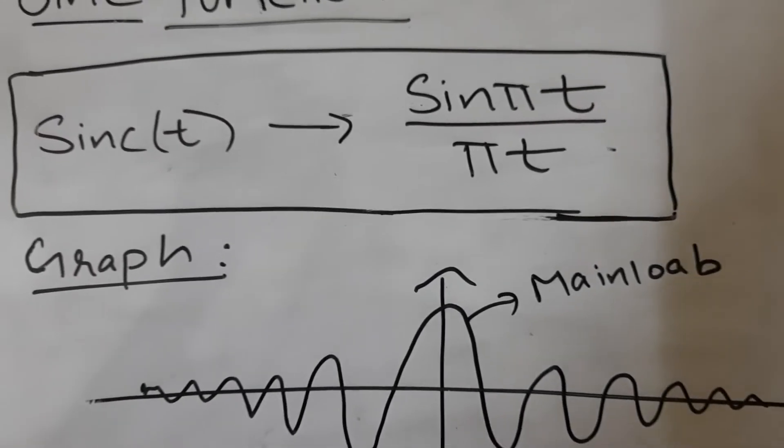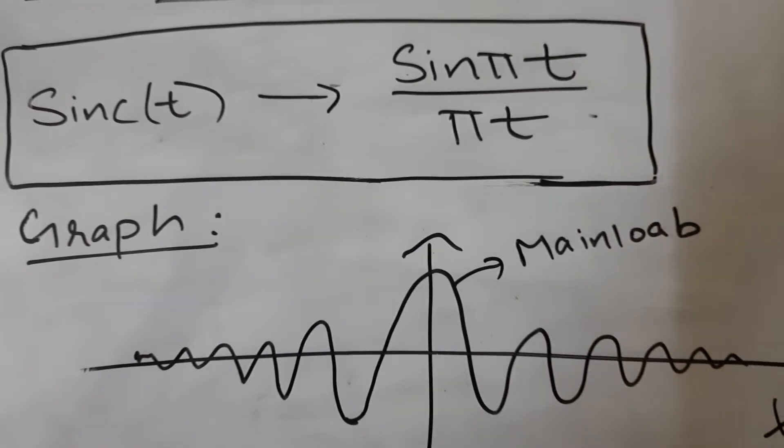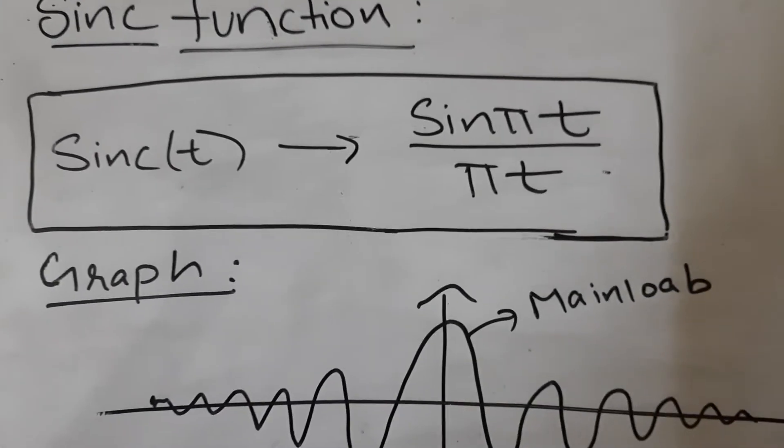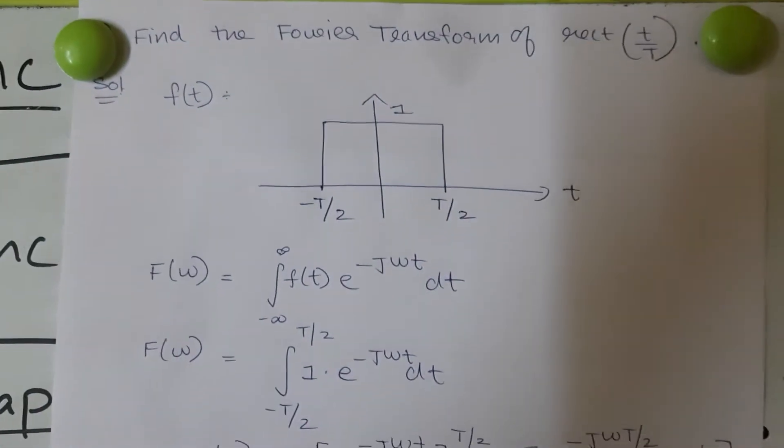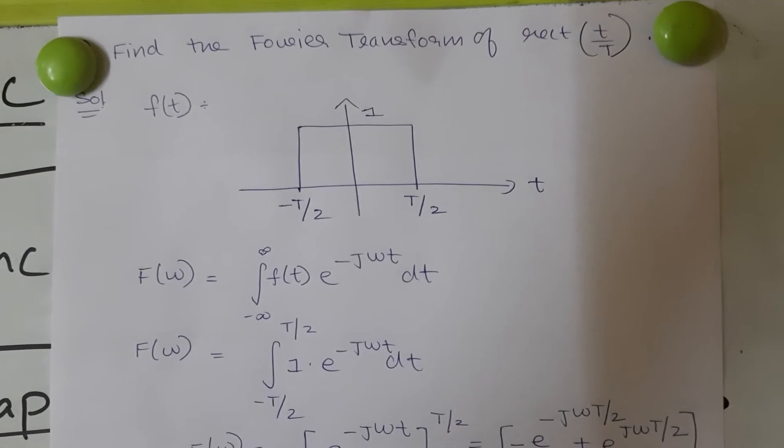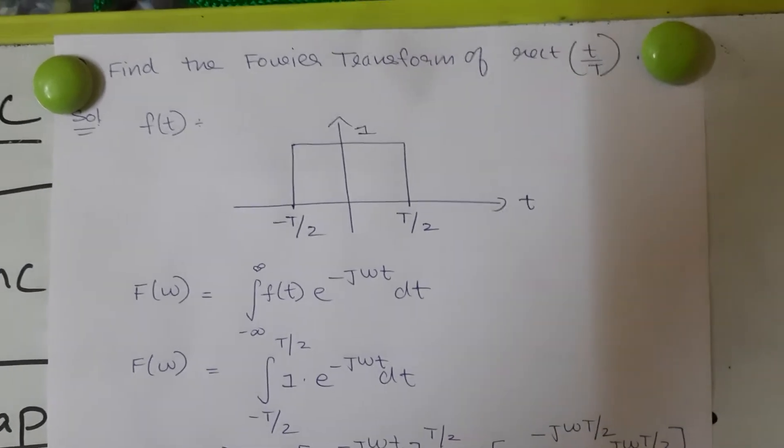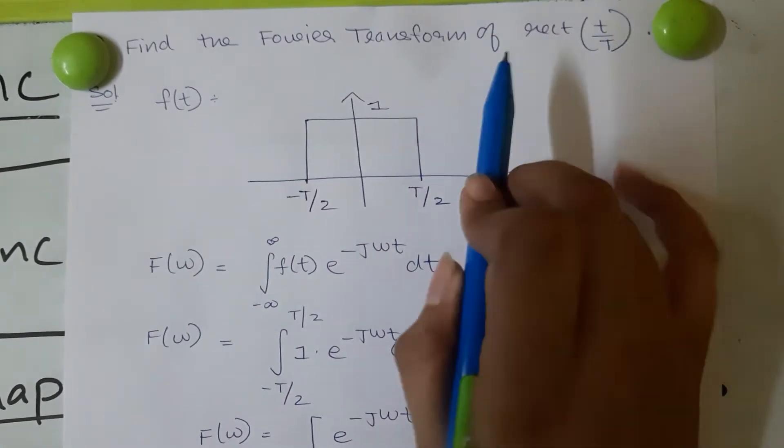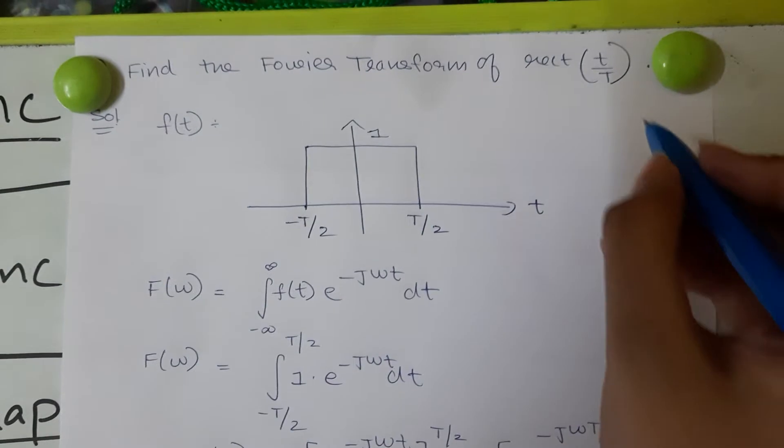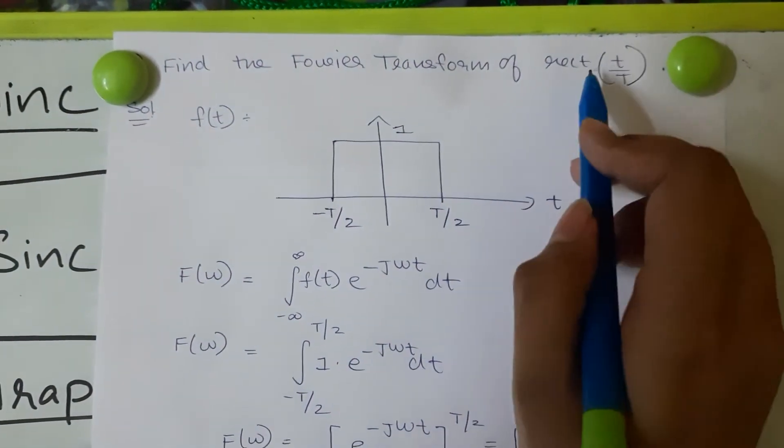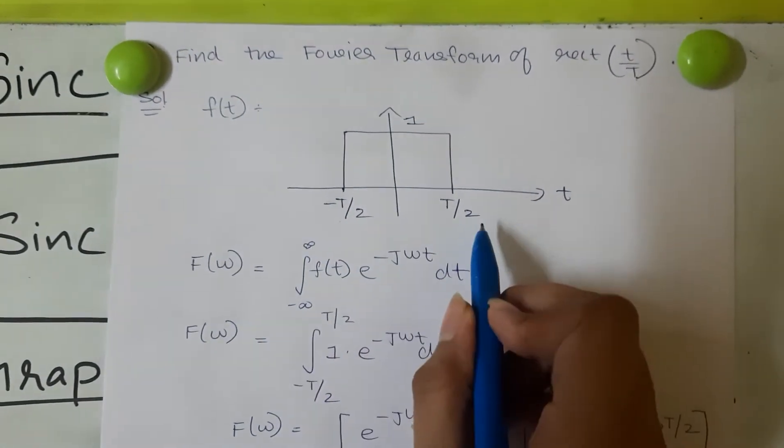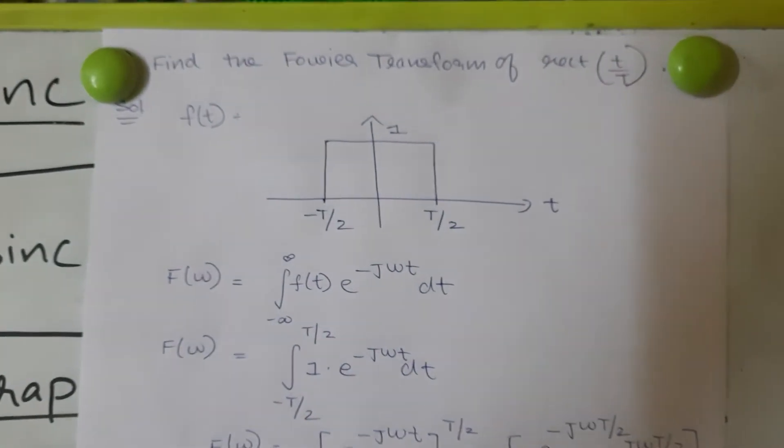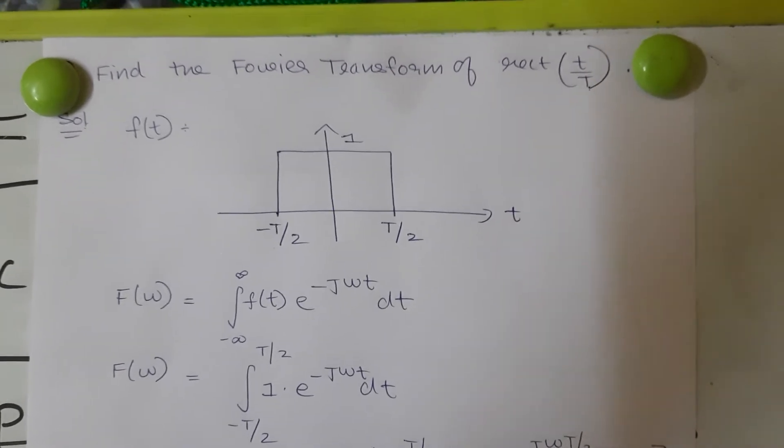Now I will show you one very important problem to understand the sinc function better. The question is to find the Fourier transform of the following signal. F of t is given as rect of t by tau which means it's a rectangular function. If it is rect of t by tau, the signal varies from minus tau by 2 to tau by 2 and the magnitude value is 1. This is how we construct a rectangular function with a total width of tau.